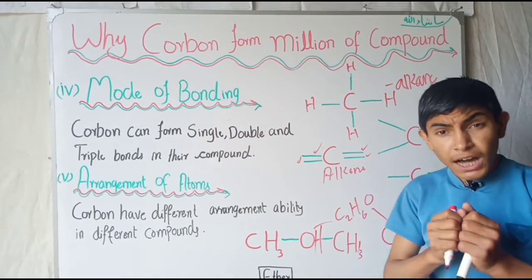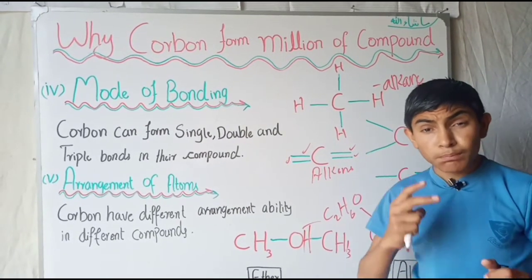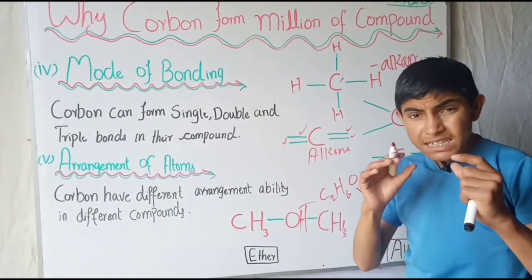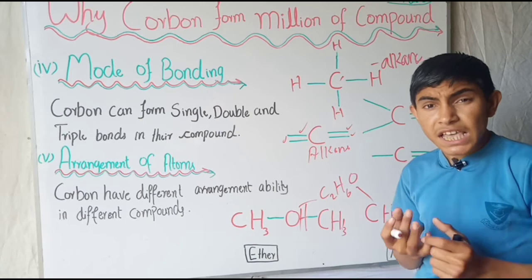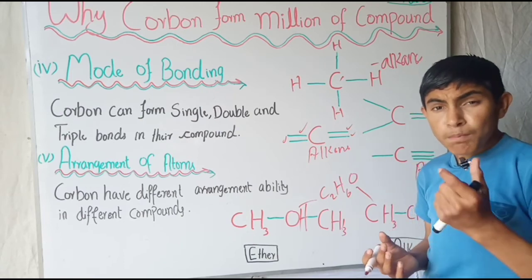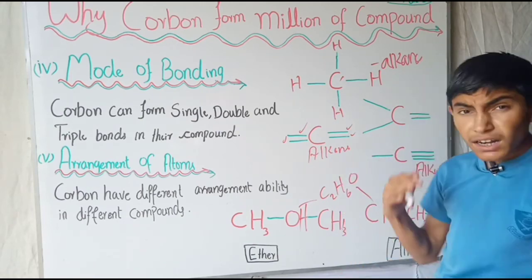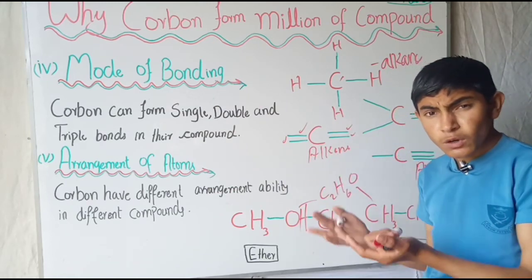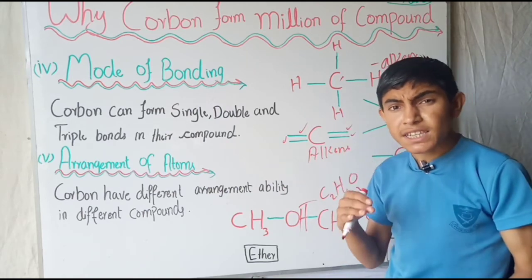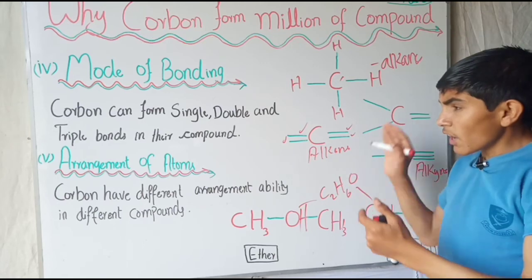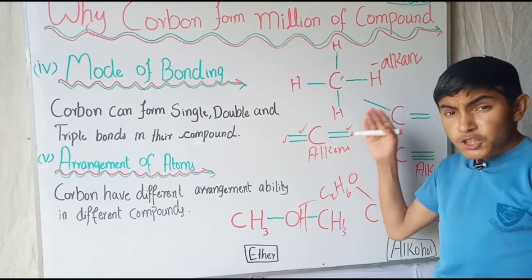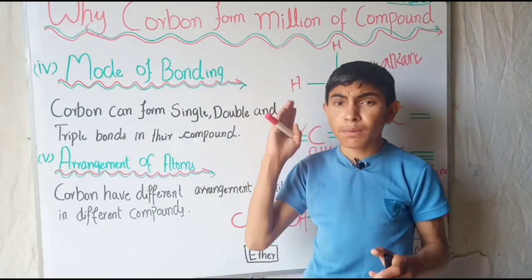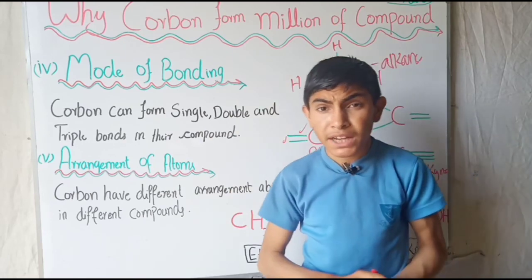Another ability of carbon is that it can form cool and strong bonds because the size of carbon is very small. Due to its small size, carbon has the ability to form bonds with a lot of elements — oxygen, hydrogen, sulfur, halogens, and many others. Due to its small size, it has the ability to make bonds with different elements, which is why carbon forms millions of organic compounds.